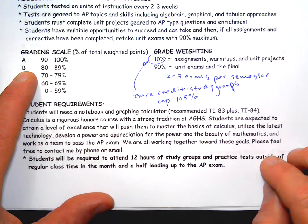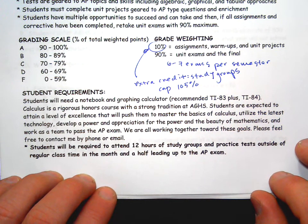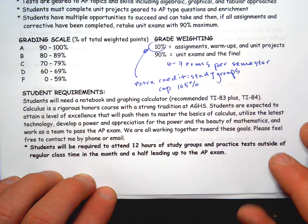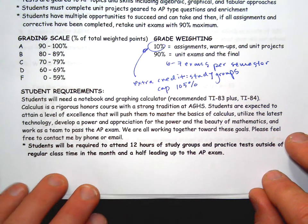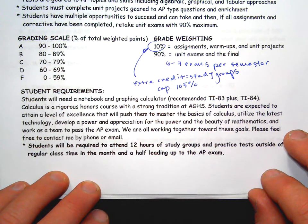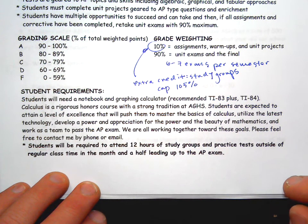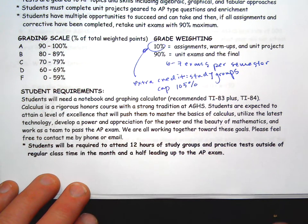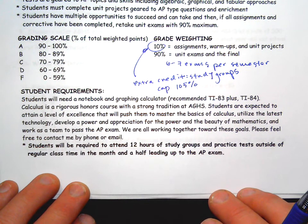Student requirements: you'll need a notebook and a graphing calculator — TI-83 Plus or TI-84 is what I'll generally use in class, but you can use other higher-level TIs or other brands. You may just need to look up some functions on your own, which is very reasonable. Make sure the calculator you buy is allowed on the AP test — anything with internet connectivity, Bluetooth, or Wi-Fi will not be allowed. Calculus is a rigorous honors course with a strong tradition here. Students are expected to master the basics of calculus, utilize the latest technology, develop appreciation for the power and beauty of mathematics, and work as a team to pass the AP exam.